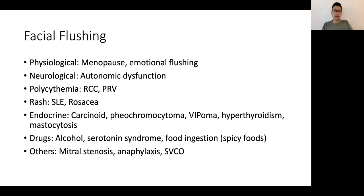The third group would be high haemoglobin states — in polycythaemia rubra vera or in renal cell carcinomas where there can be excessive erythropoietin production resulting in polycythaemia. The fourth group would be patients having a rash affecting the face — in lupus, in rosacea, and also in mitral stenosis where there can be a described facial flushing appearance. The last group is biochemical-mediated processes — carcinoid, phaeochromocytoma, vipomas, hyperthyroidism, and mastocytosis, where chemicals such as histamines and vasoactive agents are released causing flushing.